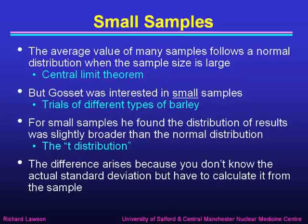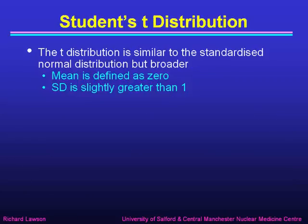The difference between the t-distribution and the normal distribution arises because you don't know the actual standard deviation, but have to calculate it from the sample. The t-distribution is very similar to the standardized normal distribution, but it's slightly broader. The mean of the t-distribution is defined as zero, just like the mean of the standardized normal distribution, but the standard deviation of the t-distribution is slightly greater than one. Remember, the standard deviation of the standardized normal distribution is defined as being exactly one.